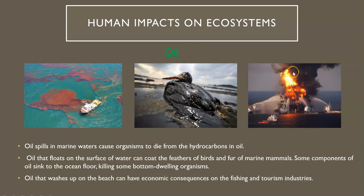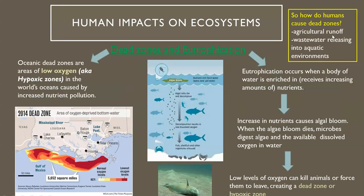Oil that washes up on the beach can have economic consequences for tourism and fishing industries because someone has to go clean up that oil. This last picture is from the BP Deepwater Horizon oil spill — it was this big oil barge that essentially exploded and leaked, causing quite a bit of damage. We'll get into that more in May.